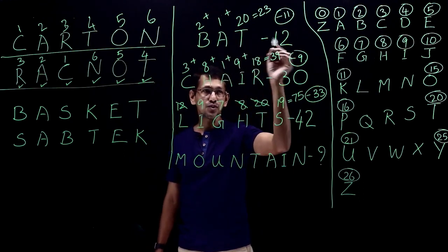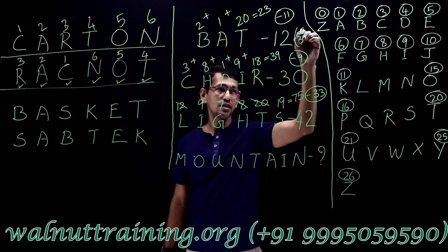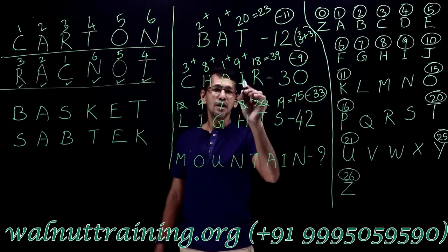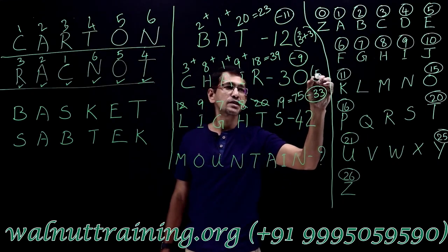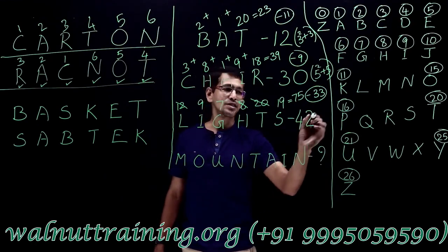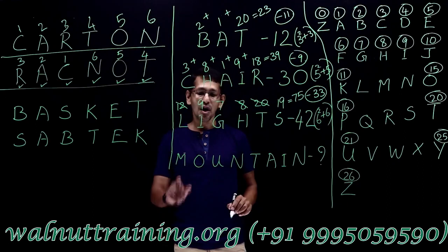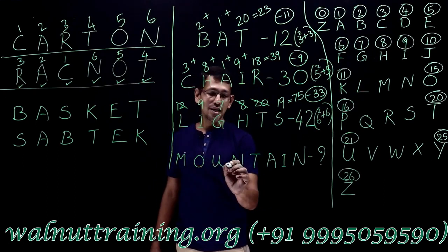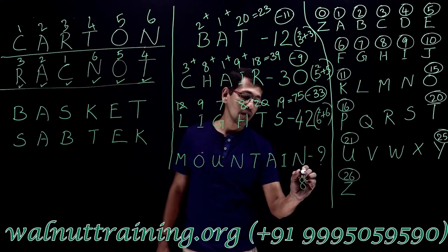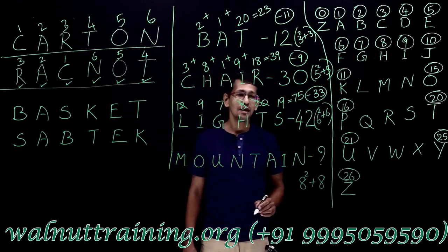So 3, this is 12. What come to my mind is 12 is what? 3 square plus 3. Where did that 3 come from? 3 letters. And chair. How many letters? 5. 5 square plus 5. 5 square plus 5 is 30. And how about lights? 6 letters. 6 square plus 6. 42. Now how many letters in mountain? 8 letters. So 8 letters means 8 square plus 8. 64 plus 8. The answer must be 72.